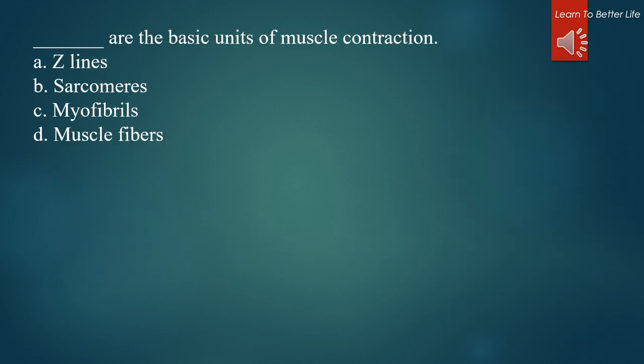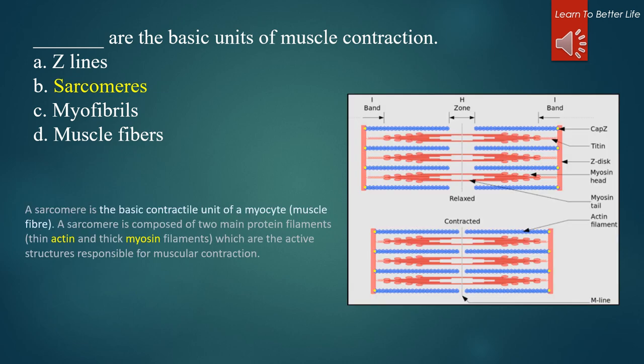Question 2. A. Zeolines. B. Sarcomeres. C. Myofibrils. D. Muscle fibers. The answer is B. Sarcomeres. A sarcomere is the basic contractile unit of a myocyte, or muscle fiber. A sarcomere is composed of two main protein filaments, thin actin and thick myosin filaments, which are the active structures responsible for muscular contraction.